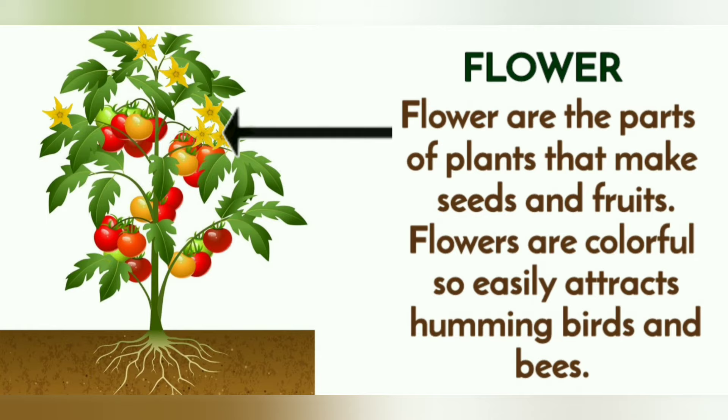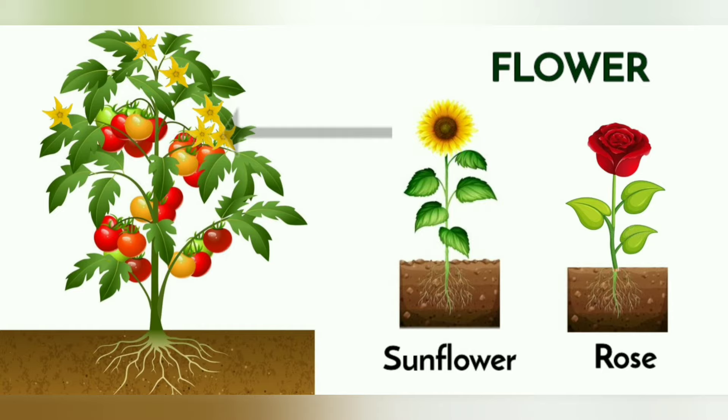Flowers are the parts of plants that make seeds and fruits. Flowers are colorful so easily attract hummingbirds and bees. Some of the flowers we like are sunflower and rose.